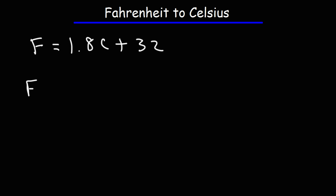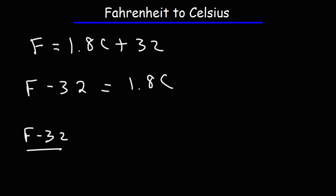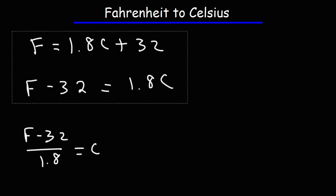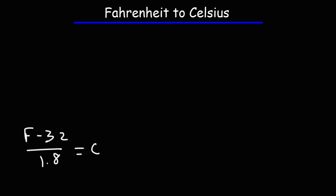First we need to subtract both sides by 32, and then we need to divide both sides by 1.8. So this is the formula we need to use in order to convert Fahrenheit to Celsius: the Celsius temperature is the Fahrenheit temperature minus 32, divided by 1.8.